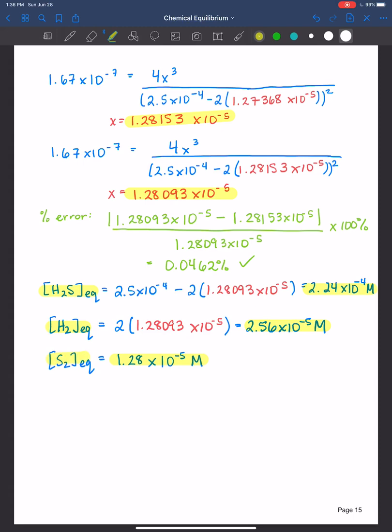We always ask ourselves, does this answer make sense based on the equilibrium constant? So based on Kc equal to 1.67 times 10 to the negative 7th, you would expect more reactants than products at dynamic equilibrium. And indeed, that is the case. When you look at the concentrations that we just calculated here, you see that we have a more concentrated reactant of hydrogen sulfide than we do of the products hydrogen gas and sulfur gas. So this all checks out.